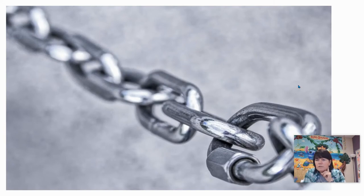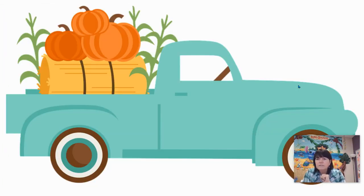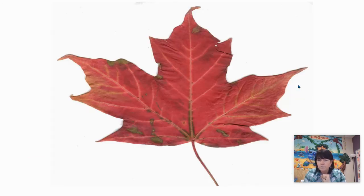Let's try the next one. This is a chain — how would you take it apart? Just two parts. Ch-ain. Ch-ain. Good. This is a truck. Truck. Two parts. Tr-uck. Tr-uck. Good. Leaf — you do it. Good. L-eaf. L-eaf. Good.